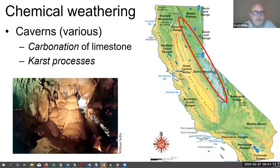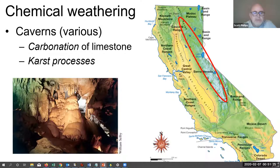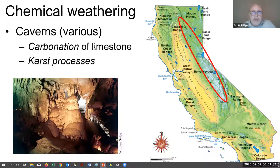One example of chemical weathering is the creation of caverns in limestone. These are found in various places along the mountainous regions of California where remnant pieces of limestone exist. The chemical process is called carbonation, where acidic water dissolves limestone — a rock created on the seafloor from the skeletons of sea creatures. When exposed to acidic water, it dissolves and leaves behind an open cavern. These are also called karst processes.